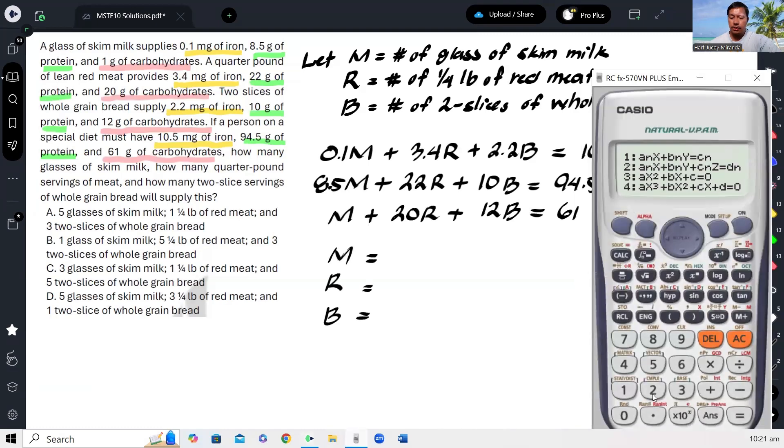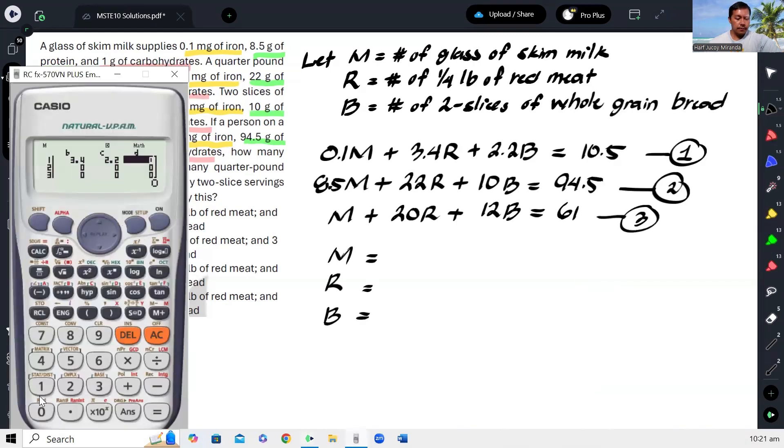Mode equation. Three equations, three unknowns. So 0.1, 3.4, 2.2. 10.5, and then 8.5, 22, 10, 94.5, 1, 20, 12, and 61.